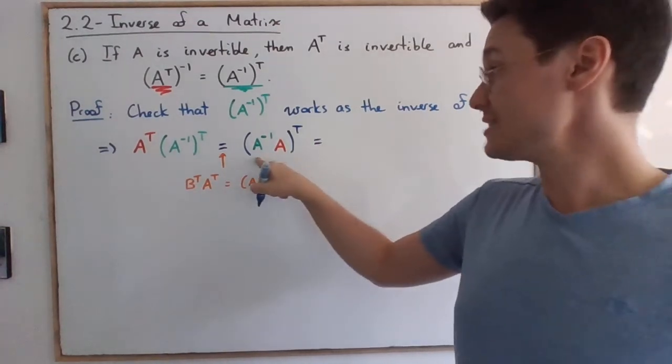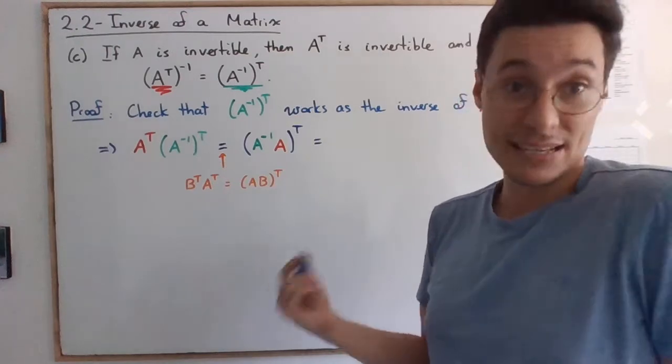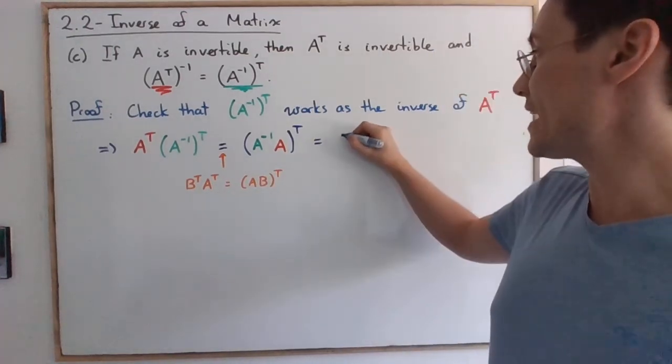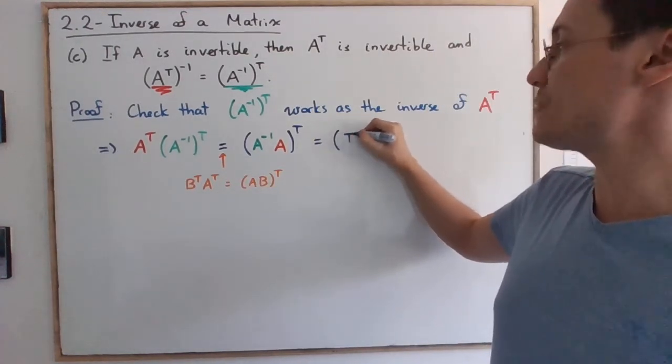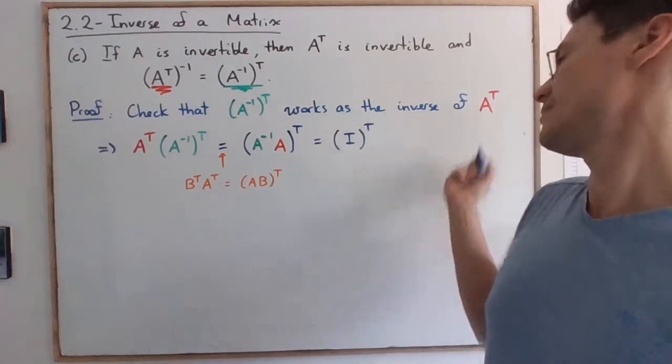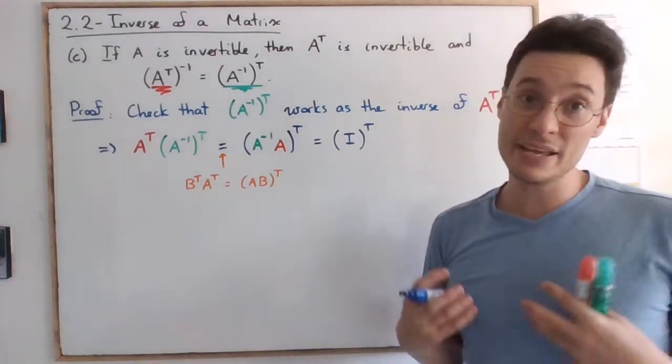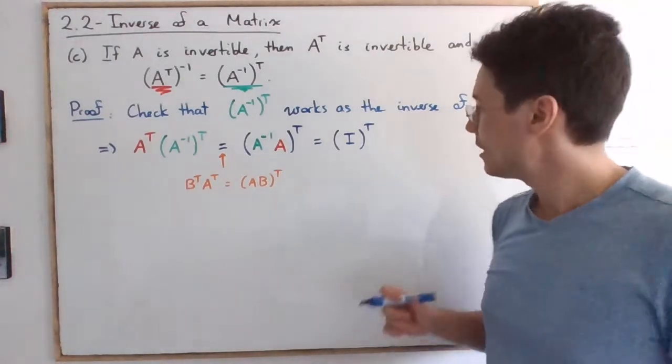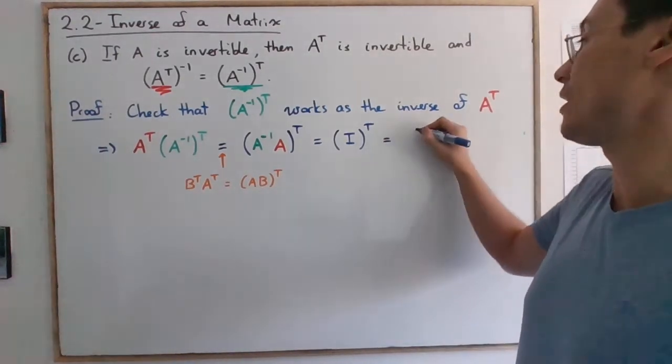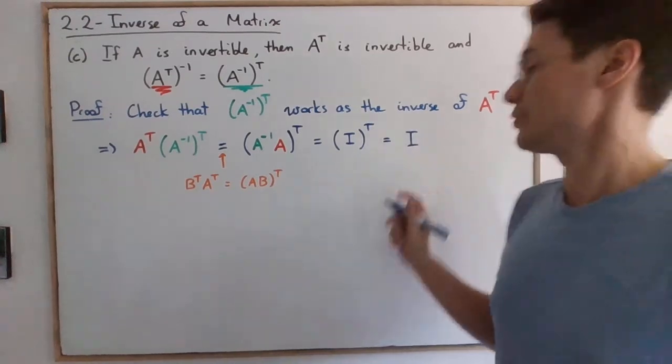Then, A^-1 times A equals I. So what you get is I transpose. And I being a diagonal matrix, its transpose is equal to itself. So here you go, you got I. Remember that this is because I is diagonal.